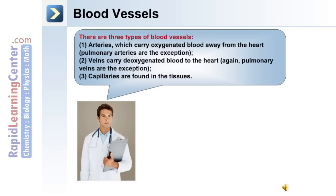Normally arteries carry oxygenated blood away from the heart; however, the pulmonary arteries are the exception. Normally veins carry deoxygenated blood to the heart, and again the pulmonary veins are the exception to this rule. Capillaries are found in the tissues and they are the site of exchange.